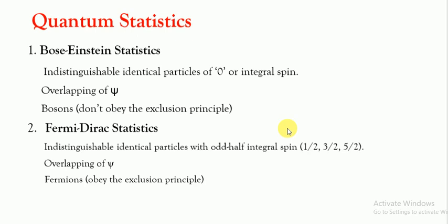Bose-Einstein statistics deals with indistinguishable identical particles of zero or integral spin — these are called bosons. They do not obey the exclusion principle. Fermi-Dirac statistics deals with indistinguishable identical particles of odd half-integral spin such as 3/2 and 5/2 — these are called fermions. They also do not obey the exclusion principle in the same sense. What is the difference between Bose-Einstein and Fermi-Dirac statistics?